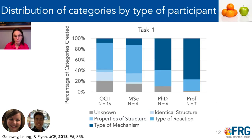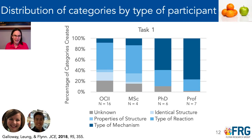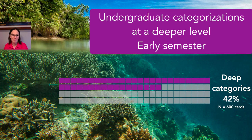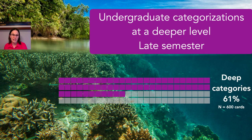We saw a distribution of categories by participant: organic chemistry 2 students sorted primarily by properties of structure or type of structure, while PhDs and professors sorted more by type of reaction and type of mechanism. We could also quantify how many categorizations were at the deeper level, and we looked at this between early and late semester. Early in the semester, only 42 percent of the cards were sorted into deeper categories in one aspect of our study. Later in the semester, that shifted towards 61 percent — so we do see a shift toward deeper-level organization of thinking by the end of a semester.